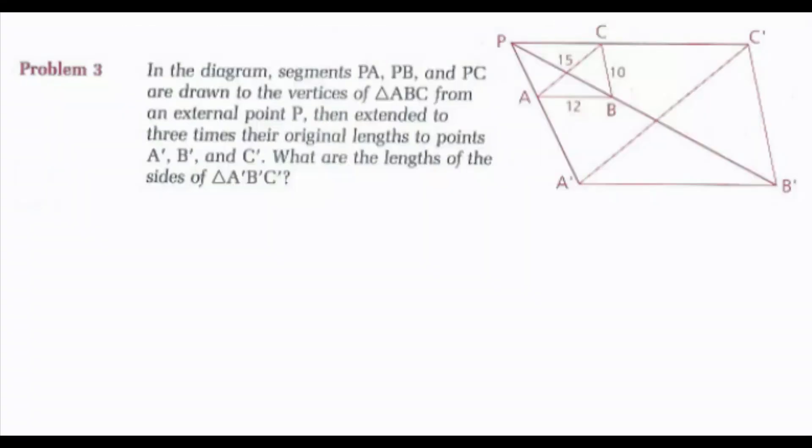Looking at problem 3 in the diagram, segments PA, PB, and PC are drawn to the vertices of triangle ABC from an external point P, then extended to 3 times their original lengths to points A'B'C'. What are the lengths of the sides of triangle A'B'C'? So if they're extended to 3 times their original lengths, we're just making a dilation. So I can multiply each of their lengths by 3 to give me the lengths of the new sides.